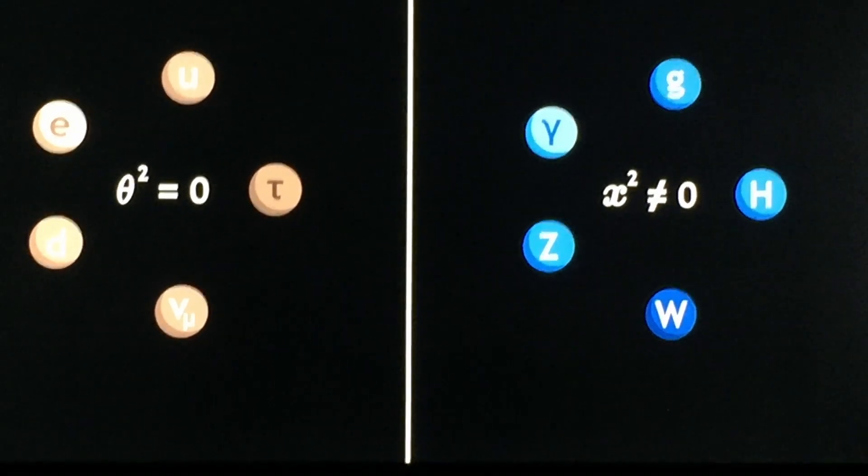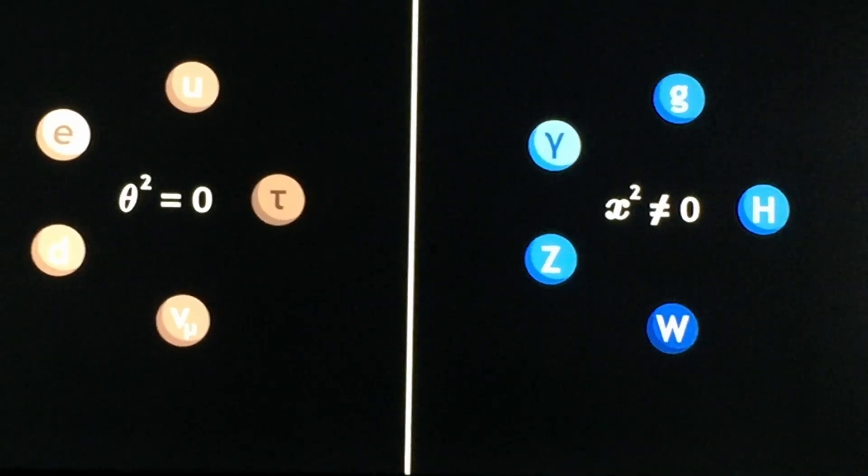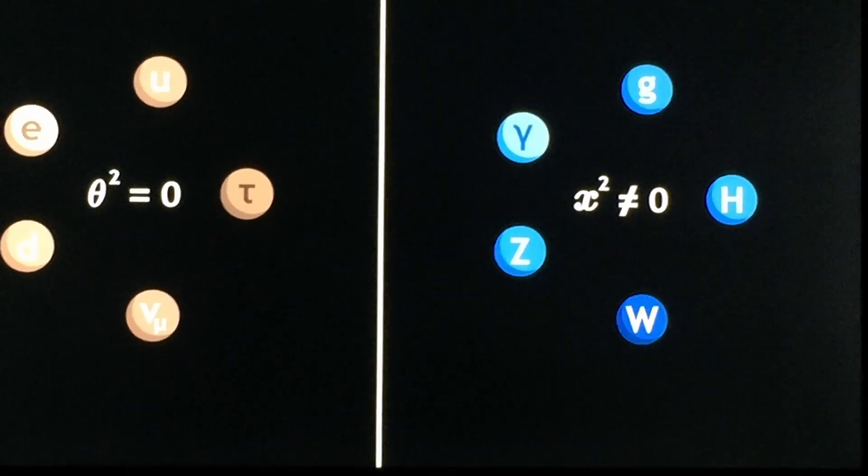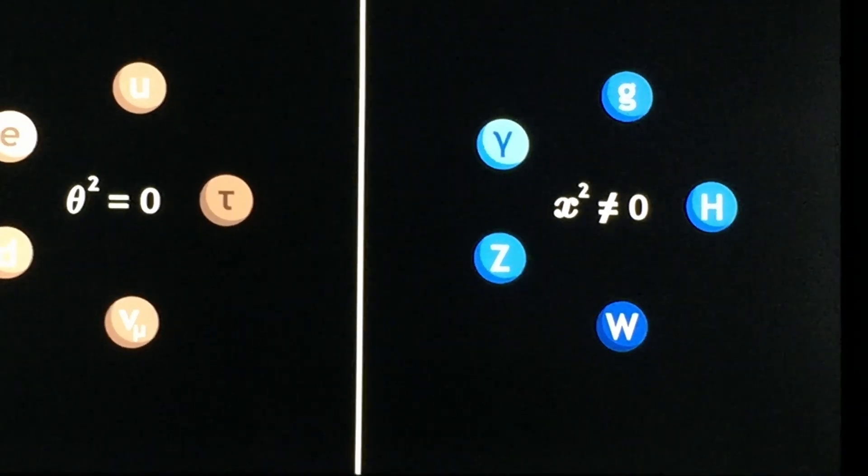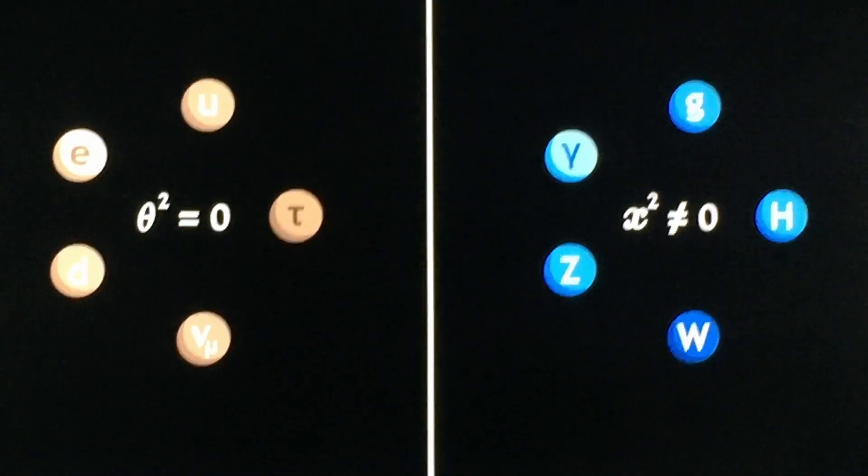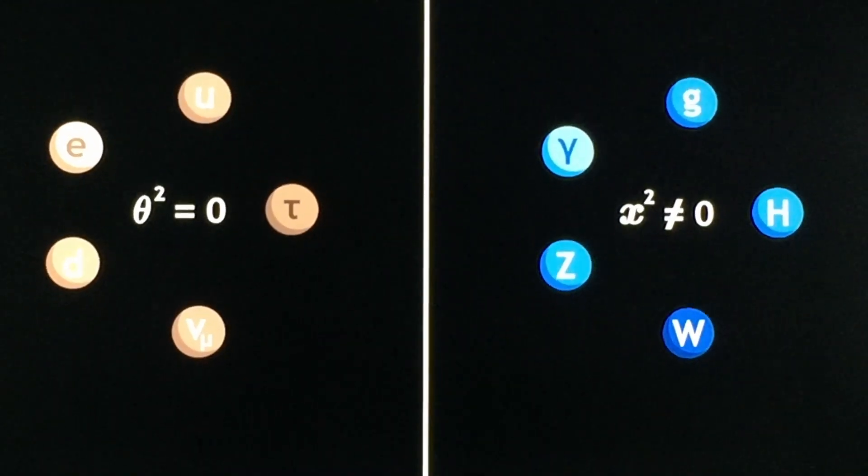So Grassmann numbers and the Pauli exclusion principle, that's why we don't have multiple dimensions. Well, that's why we don't at least have multiple dimensions that we're aware of.